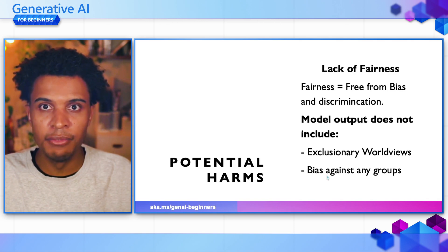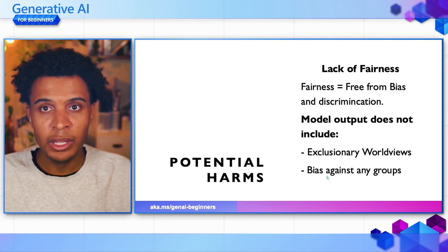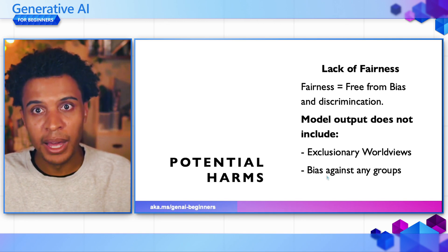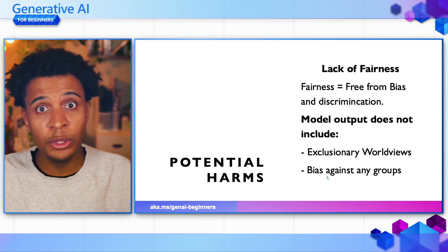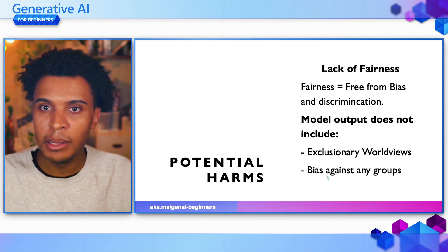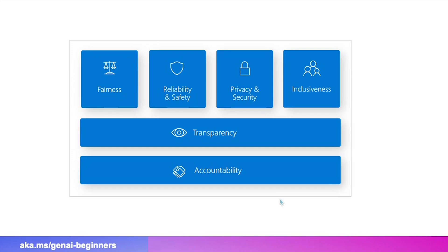And then lastly is the lack of fairness. I tell my kids all the time life isn't fair, but generative AI systems should definitely be. Fairness really equals being free from bias and discrimination — making sure the output is not producing anything with exclusionary worldviews or bias towards any particular groups. This is particularly important when generating images or text. This aligns well with Microsoft's own responsible AI practices: fairness, reliability and safety, privacy and security, inclusiveness, transparency, and accountability.